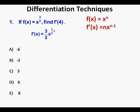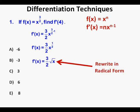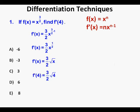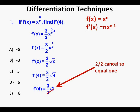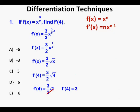Using the power rule on our problem, we have f prime of x equals 3 halves times x to the power of 3 halves minus 1. Cleaning up the exponent, 3 halves minus 1 is 1 half, so f prime of x equals 3 halves x to the 1 half power, or in radical form, 3 halves times the square root of x. Evaluating at x equals 4: f prime of 4 equals 3 halves times the square root of 4, which is 2, so 3 halves times 2 equals 3. Answer choice C.